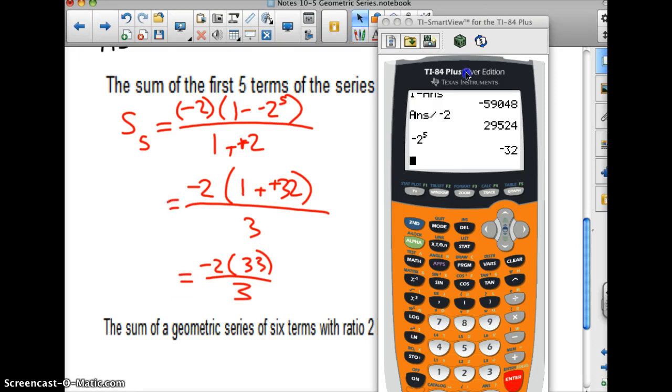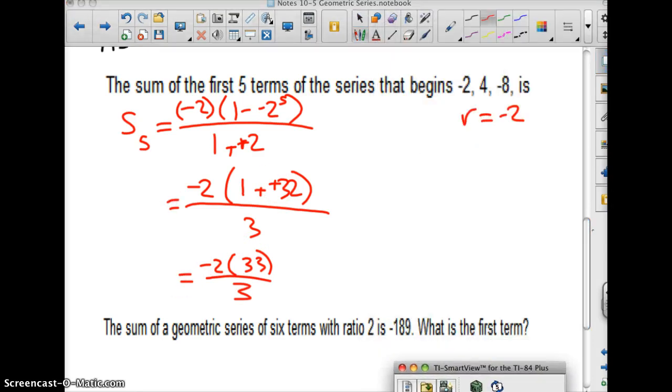So I have negative 2 times, that's going to be plus positive 32. That's going to be 33 over 3. And then I can, actually this is a factor, I can cancel 1 and 11. And then I get s sub 5 equals negative 22.